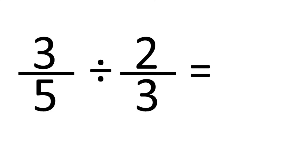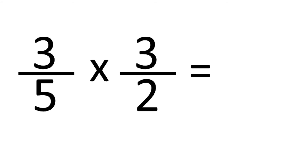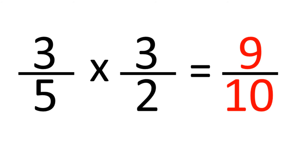Division of fractions sounds like it's going to be hard, but it's actually very simple. Take this example: what's 3 fifths divided by 2 thirds? All you do is flip the second fraction over — more formally this is known as taking the reciprocal of the fraction — and change the division sign to a multiplication sign. So we flip 2 thirds to get 3 over 2. Now it's just a simple multiplication: 3 times 3 is 9, 5 times 2 is 10, the answer is 9 tenths.